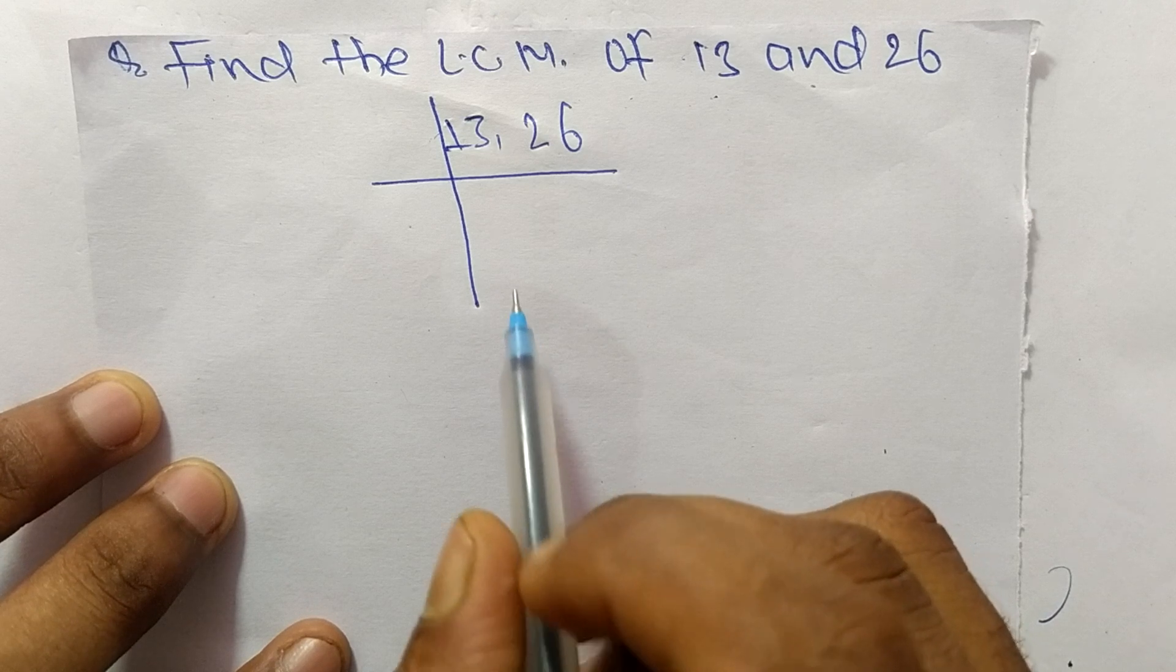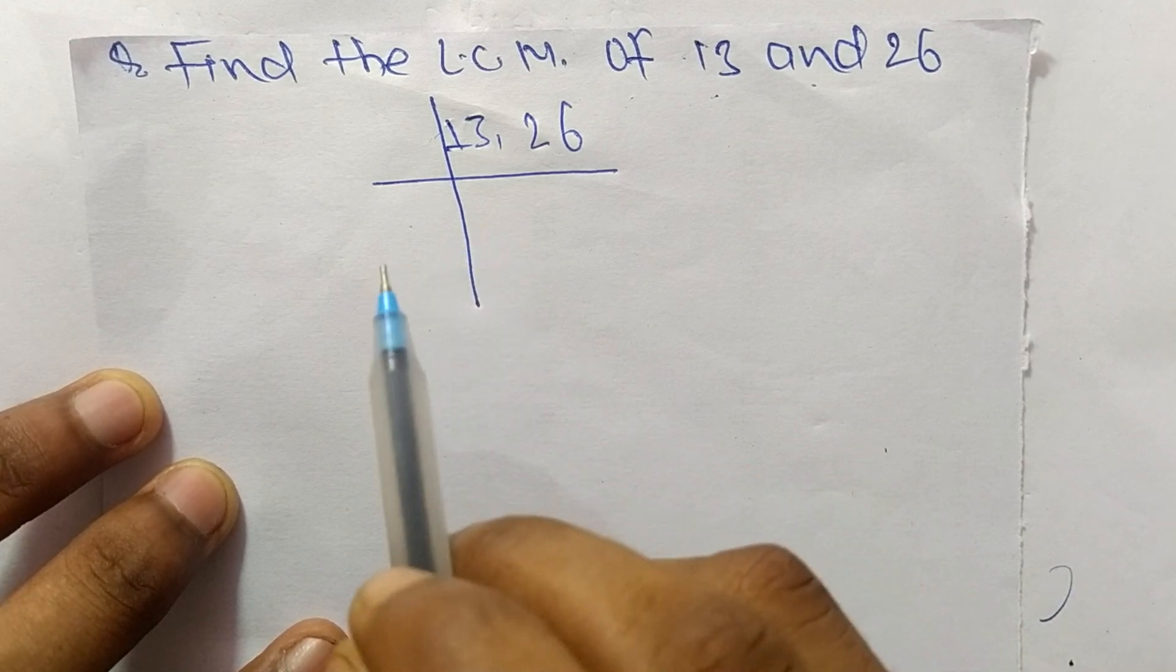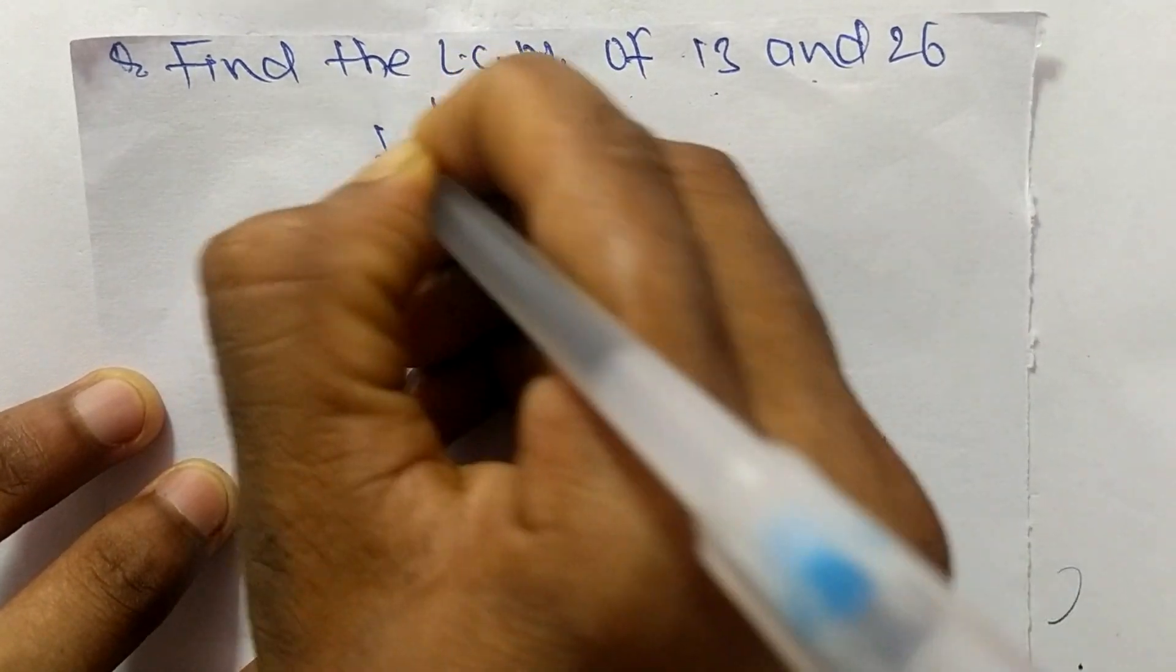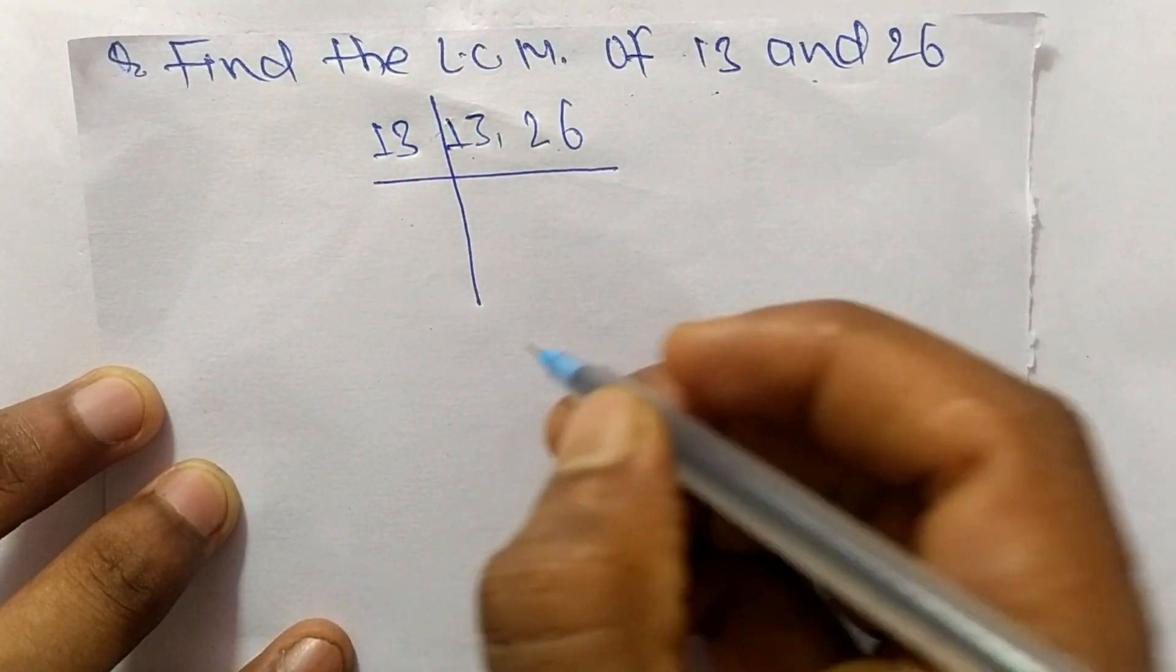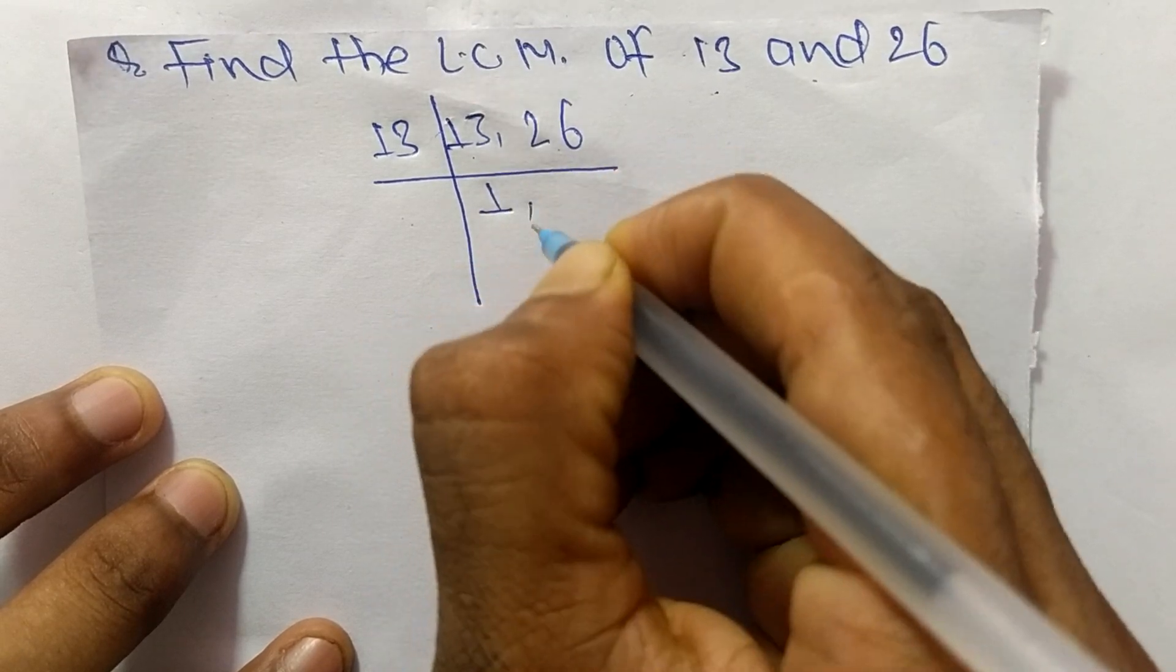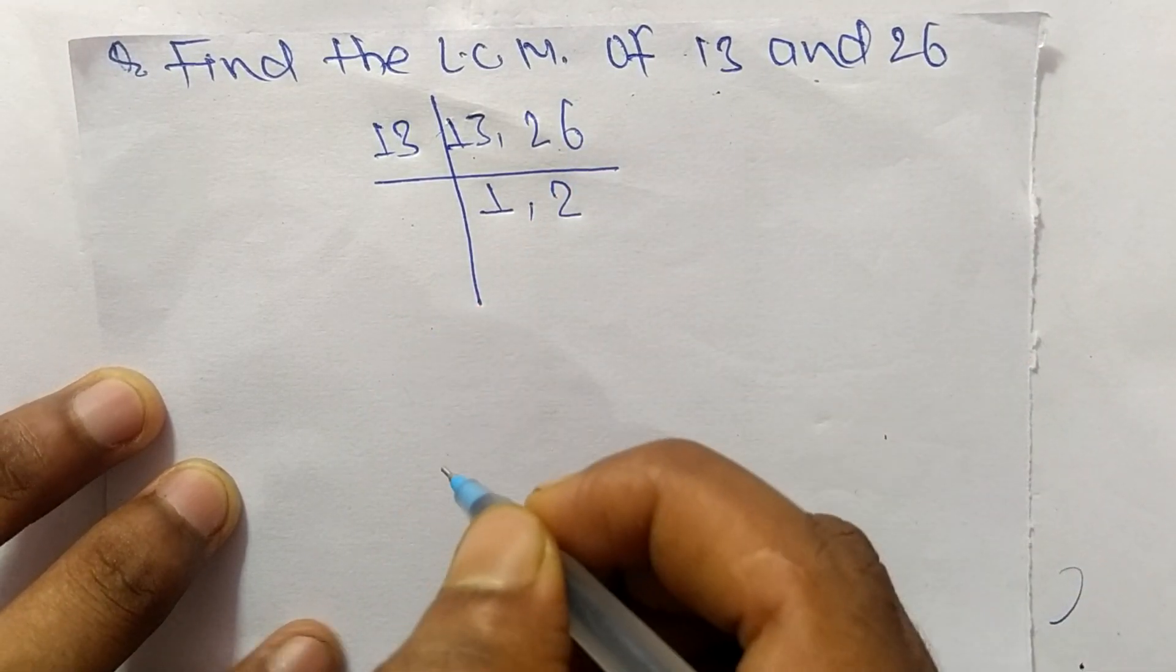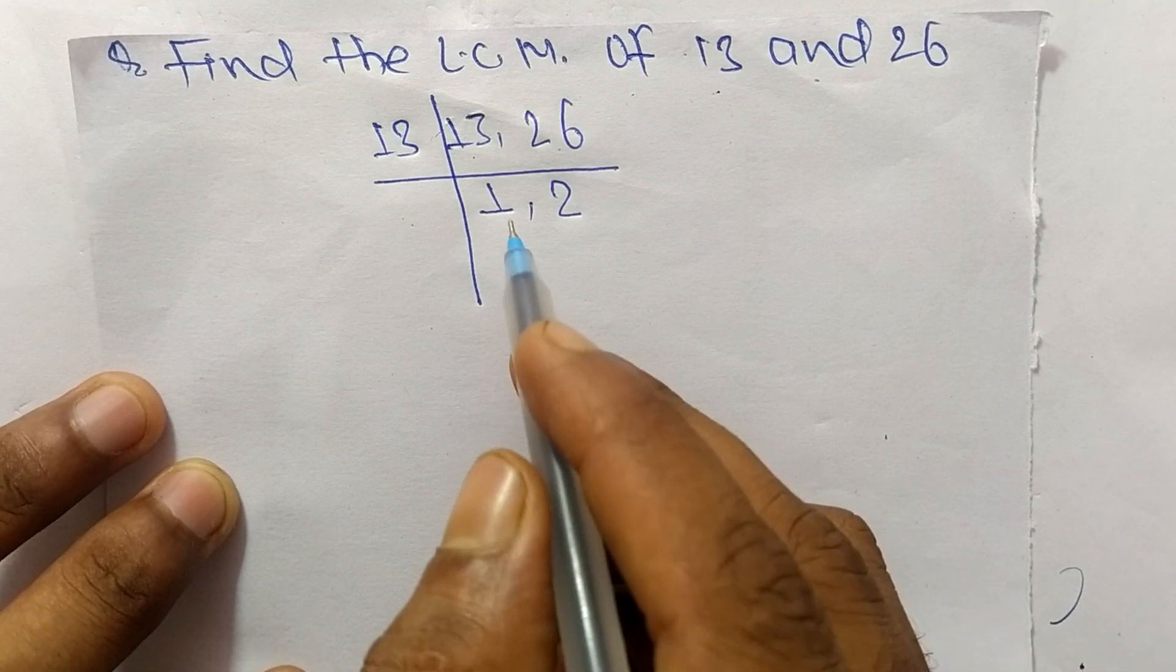First, we choose the lowest number that can exactly divide 13 and 26. The number here is 13. So 13 times 1 means 13, and 13 times 2 means 26.